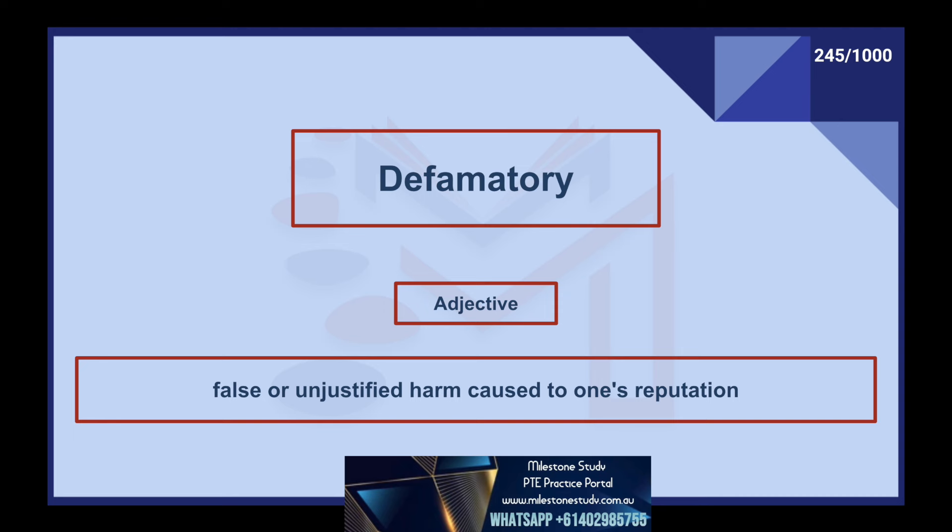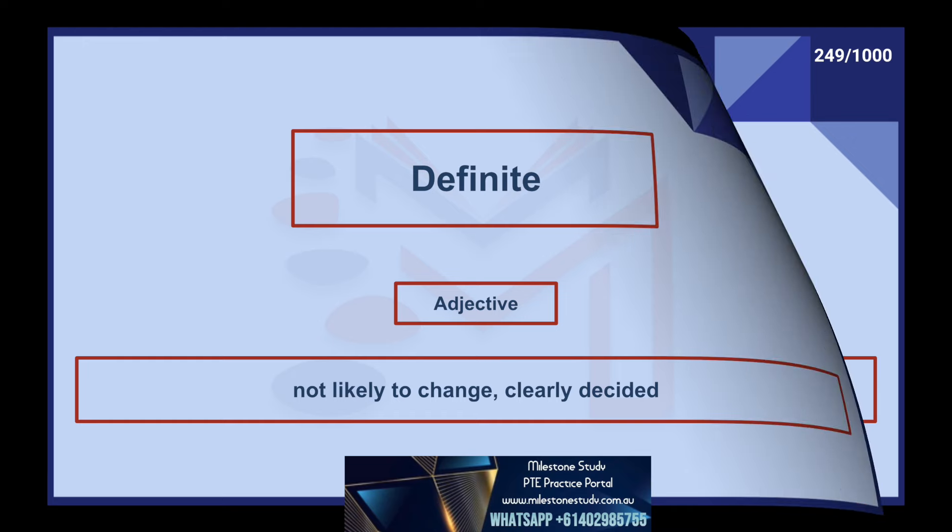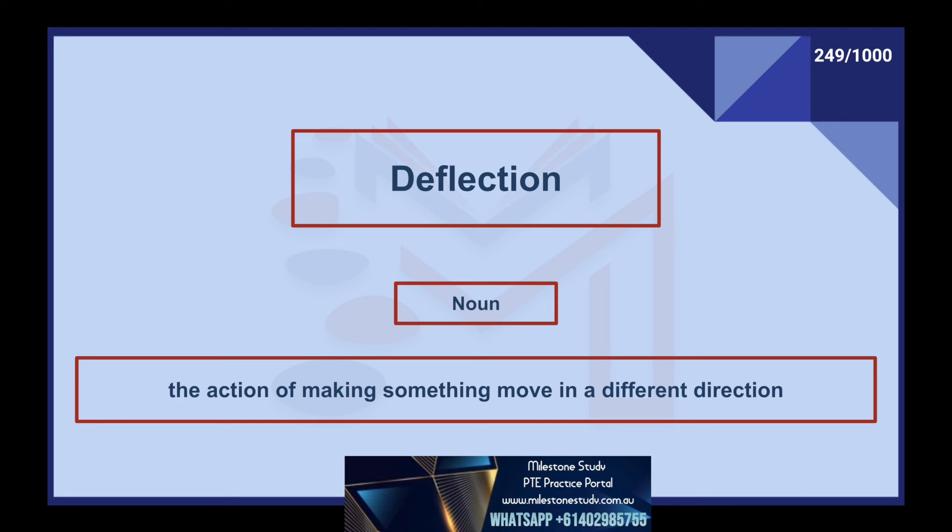Defamatory, adjective: false or unjustified harm caused to one's reputation. Defect, noun: a problem, a fault. Deficiency, noun: without something that is necessary. Definite, adjective: not likely to change, clearly decided. Deflection, noun: the action of making something move in a different direction. Degrade, verb: to treat someone without respect, to reduce an amount or strength.